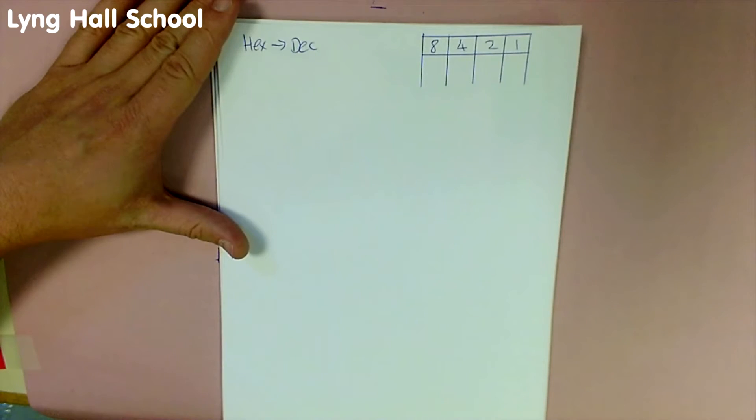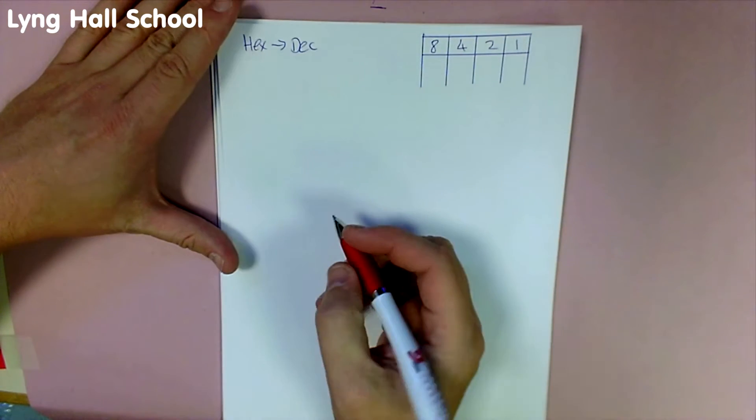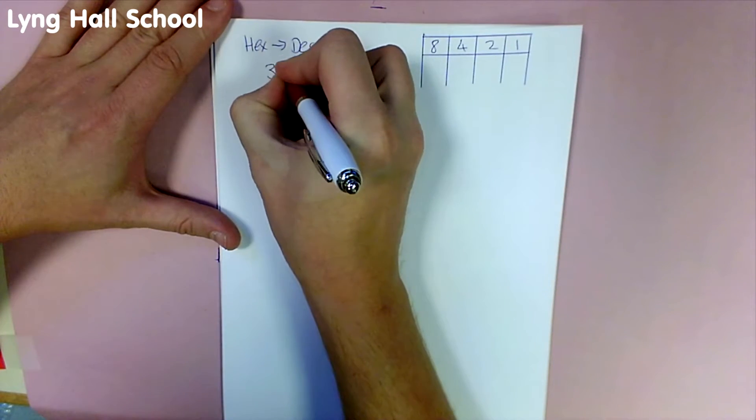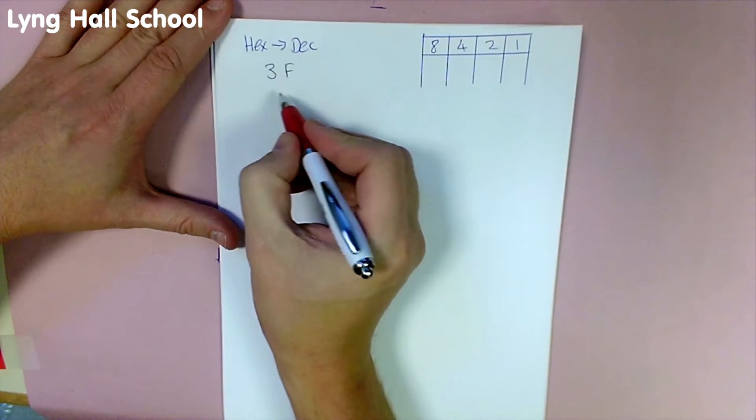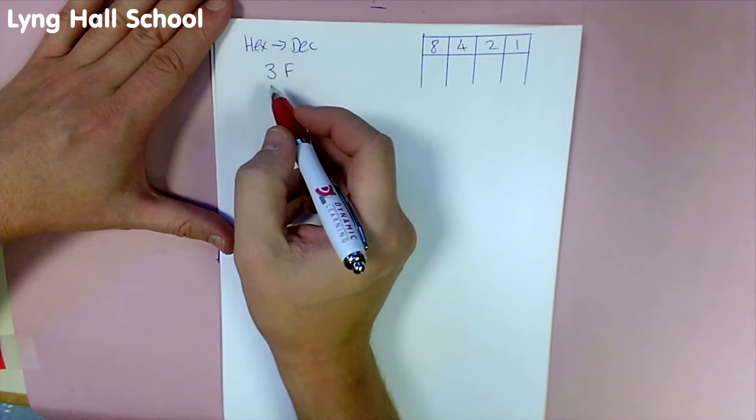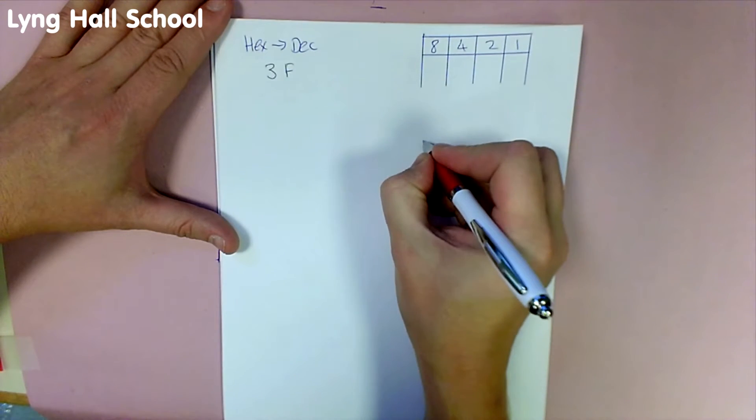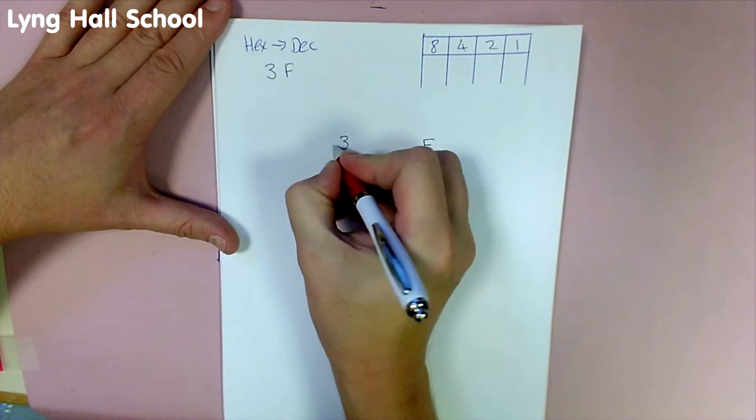We're going to start by converting hexadecimal to decimal. We'll start with 3F. So this is our hexadecimal number. To start with, this needs to be split into two separate digits, F and 3.